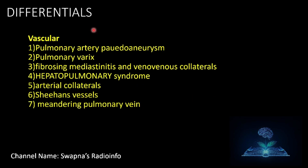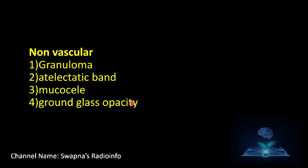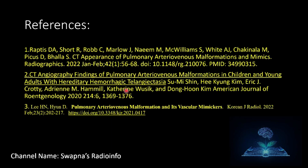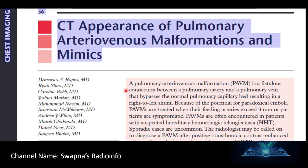Differential diagnosis — vascular lesions: pulmonary artery pseudoaneurysms, pulmonary varices, fibrosing mediastinitis, and veno-venous collaterals. Also consider hepatopulmonary syndrome, arterial collaterals, meandering pulmonary vein. Non-vascular lesions: granuloma, atelectatic band, mucous plugging, and ground-glass opacity. These are the references and articles consulted.